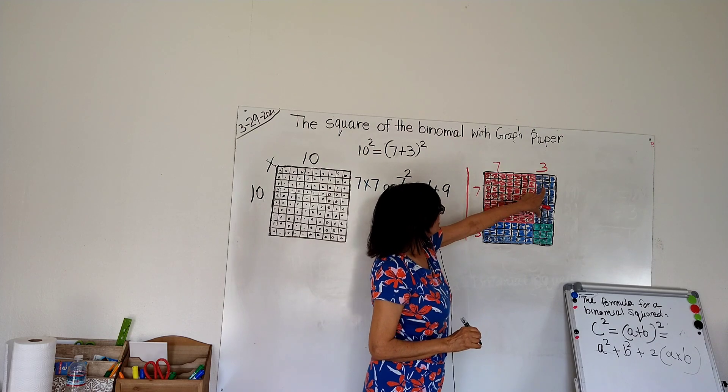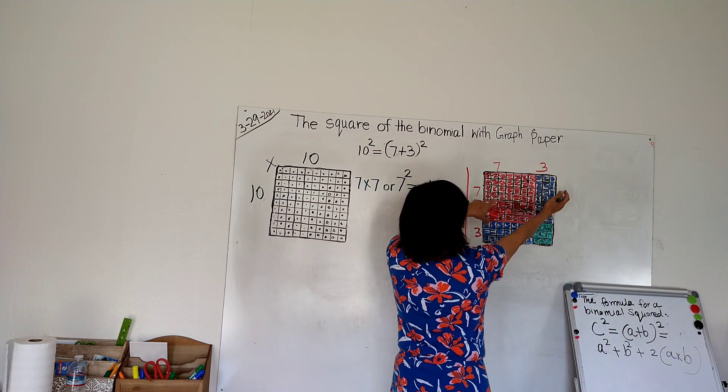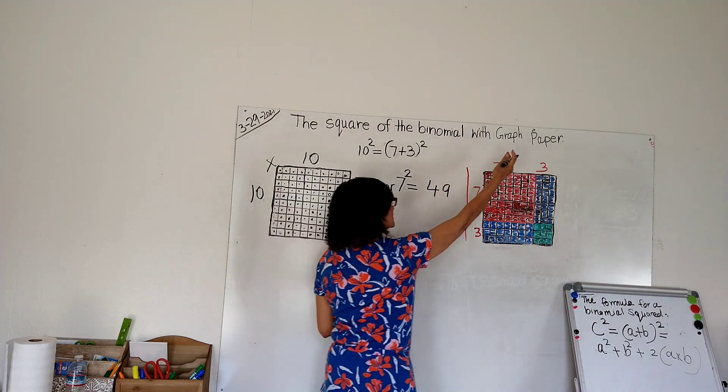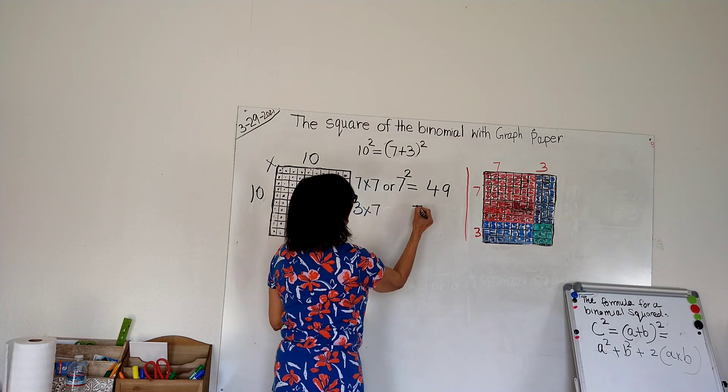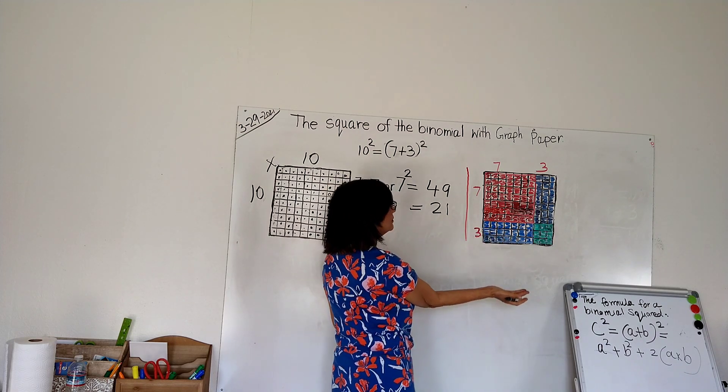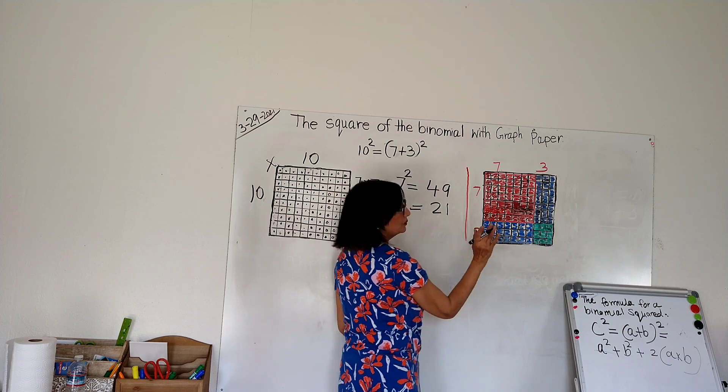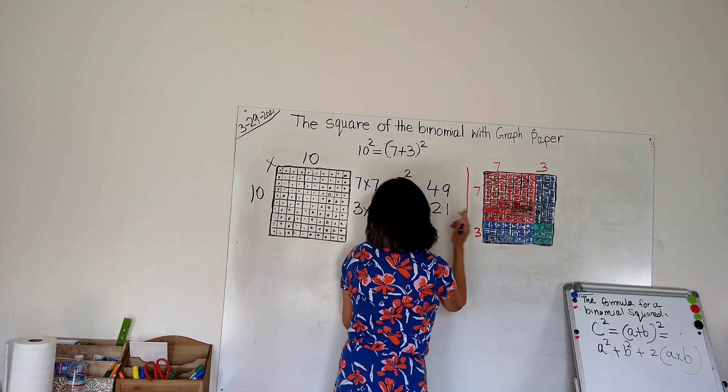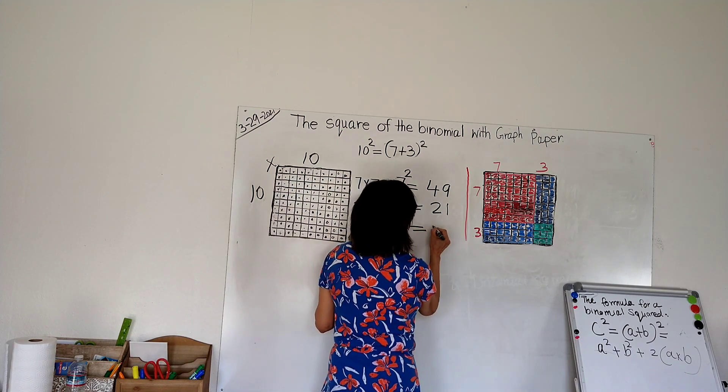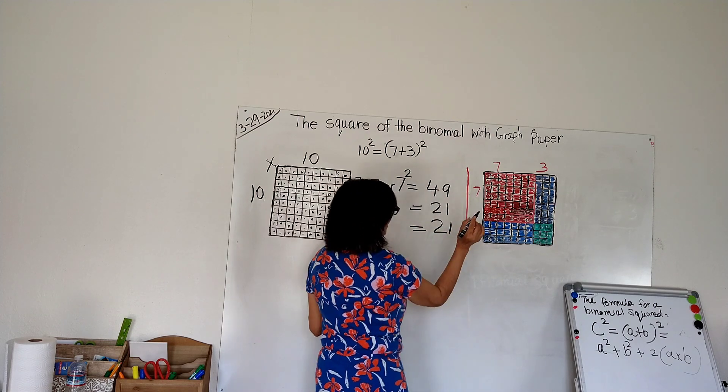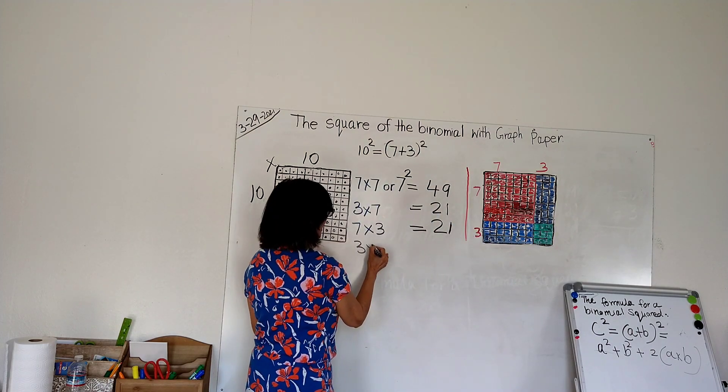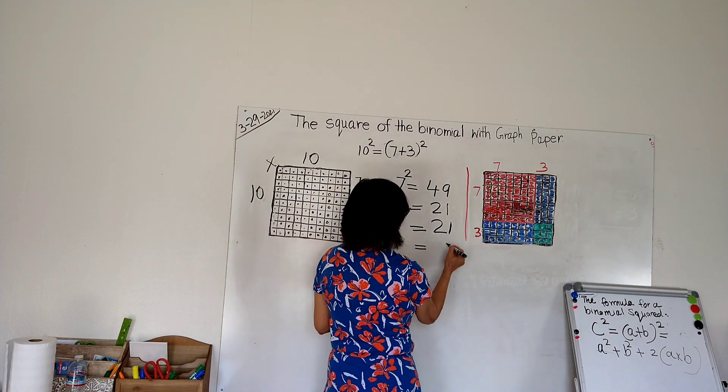Now we have a rectangle on my right hand, so 3 across and 7 down equals 21. We have another rectangle of the same size, so let's count: 7 across and 3 down, so we have 21.